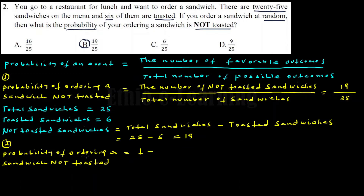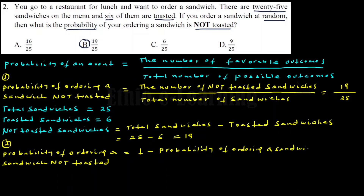Using method two: the probability of ordering a sandwich not toasted is equals to one minus the probability of ordering a sandwich toasted. This is because the probability of ordering a sandwich toasted plus the probability of ordering a sandwich not toasted equals one. By definition, the probability of an event equals the number of favorable outcomes divided by the total number of possible outcomes.